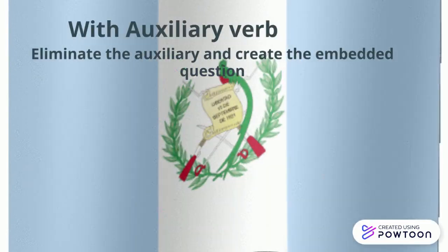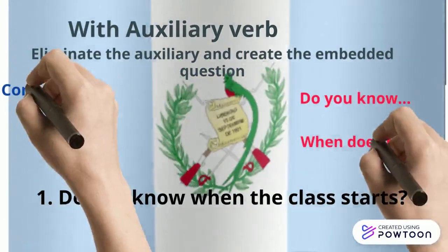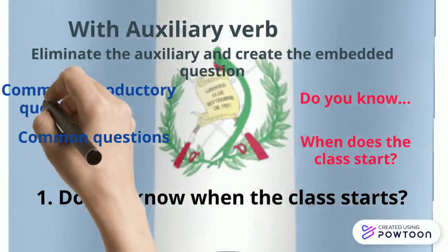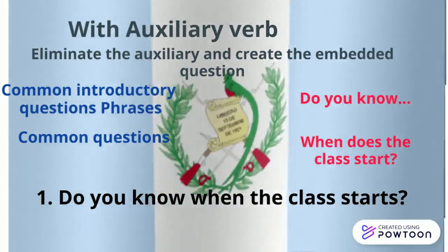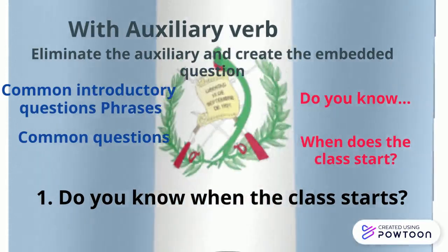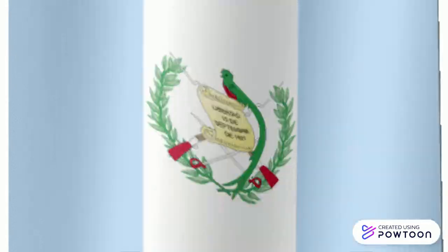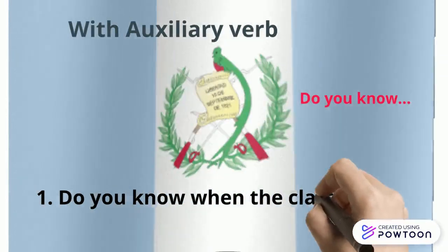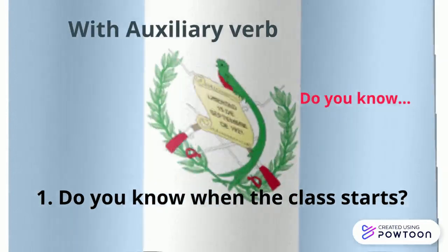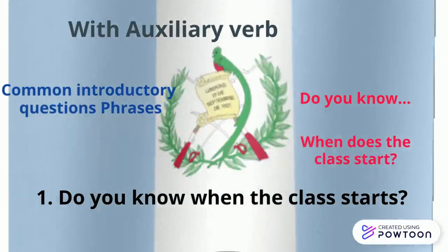With an auxiliary verb, we are going to eliminate the auxiliary to create the embedded question. If we use the introductory phrase 'do you know' and the common question 'when does the class start,' then we eliminate 'does,' and the embedded question becomes: 'do you know when the class starts?' — the 'does' is eliminated and 'starts' gets an -s ending.